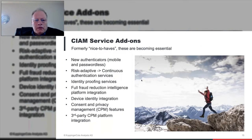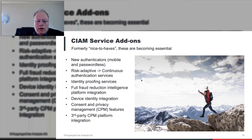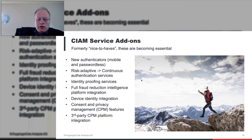Thinking about the identity fabric model, some of the services that can be added to modular CIAM solutions are new authenticators — mobile and passwordless. Passwordless is popular for lots of good reasons right now. Moving from risk-adaptive to continuous authentication, integrating identity proofing and fraud reduction services, being able to integrate consumer IoT devices, and being able to provide consent and privacy management in the platform — or working with a third-party consent and privacy management platform instead.